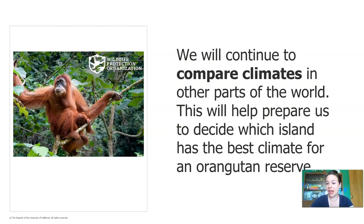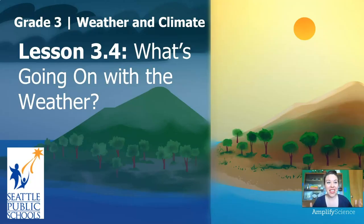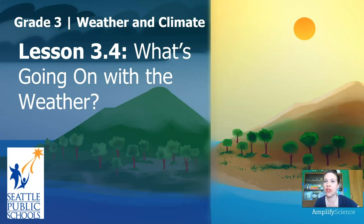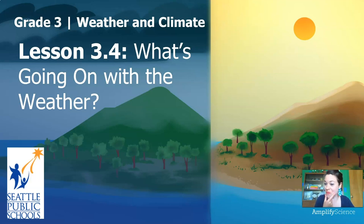We're going to continue to compare climates in other parts of the world, because this is going to help prepare us to decide which island has the best climate for the Orangutan Reserve — which is the point of this whole science unit. Thanks so much for joining me for part two of lesson 3.4. I want you to challenge yourself to think about the weather where you live. Ask an adult to help you find out what the weather's going to be in the next few days — is that weather you'd expect for the season we're in right now, or is it unusual weather? Stay safe, stay curious, and I'll see you next time. Bye!